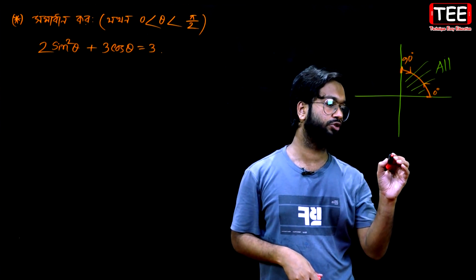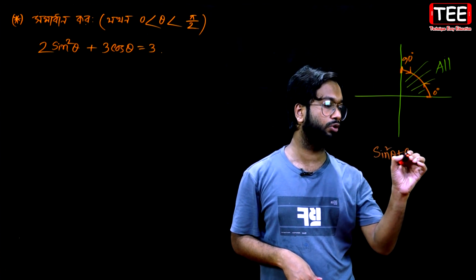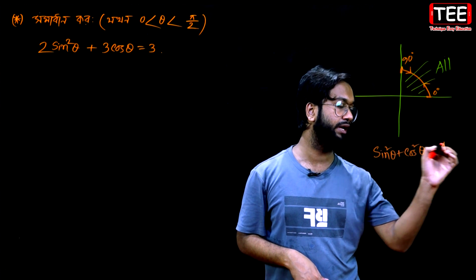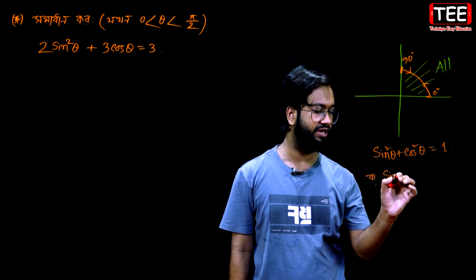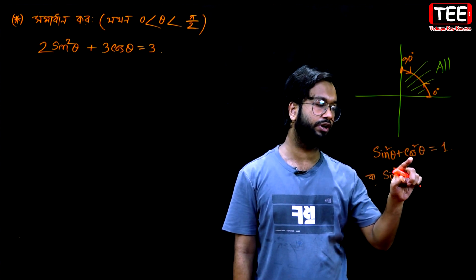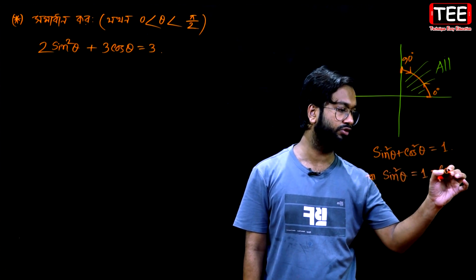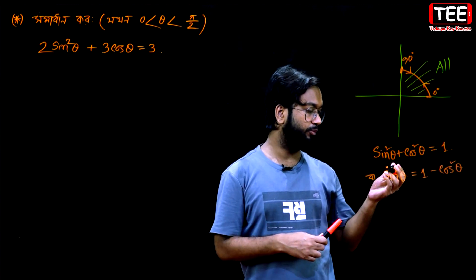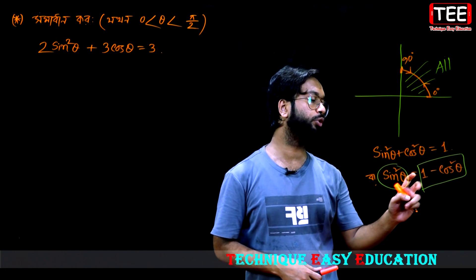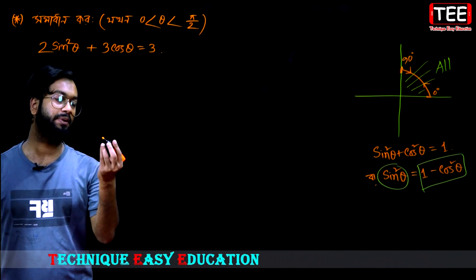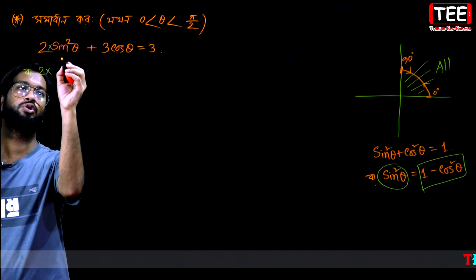So I am going to use the identity: sin²θ plus cos²θ equals 1. Therefore, sin²θ equals 1 minus cos²θ. So I can substitute sin²θ with 1 minus cos²θ.